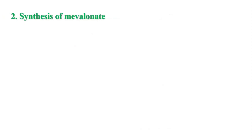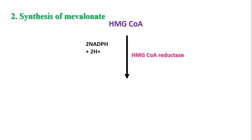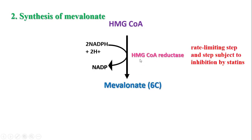Next is the synthesis of mevalonate. HMG-CoA undergoes reduction in the presence of the NADPH-dependent enzyme HMG-CoA reductase to form mevalonate. This is the rate-limiting step. Statin drugs — the hypolipidemic drugs such as lovastatin, pravastatin, and simvastatin — inhibit HMG-CoA reductase and thus reduce cholesterol synthesis.